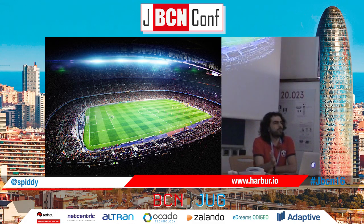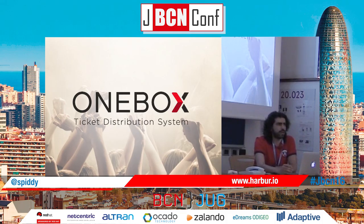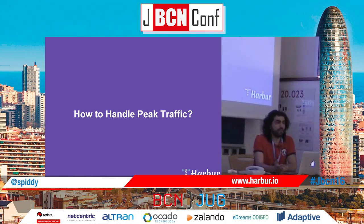How many of you have been to a game of FC Barcelona? Basically, when you bought a ticket you probably used a system that underneath uses Coolerlenses. Onebox is a ticketing distribution system and one of our clients where we put Kubernetes in production to resolve some problems they had previously. One of the biggest problems is how you can handle peak traffic when you share, for example, a game of FC Barcelona, where you need to handle a lot of people buying tickets at a specific moment in time. A simple infrastructure of putting some EC2 instances on Amazon and replicating them is not efficient and not cost-effective.